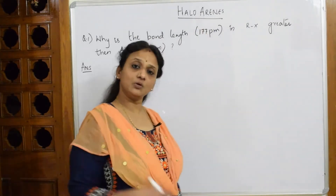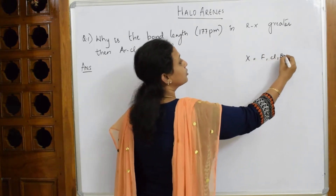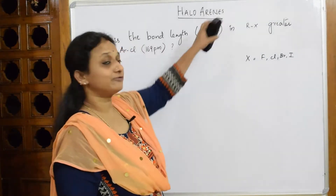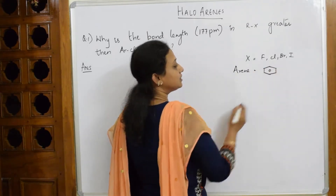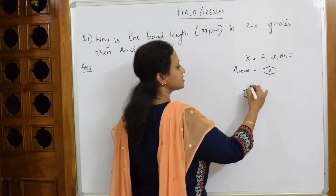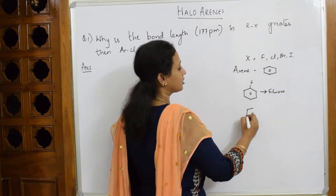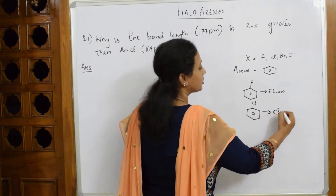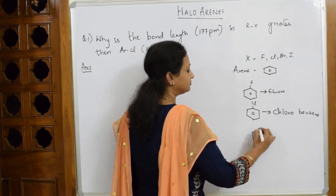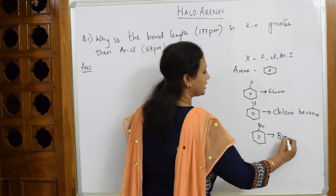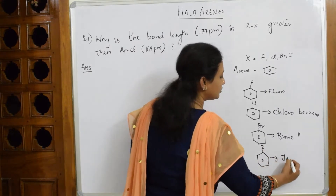As the name suggests, Haloarenes: Halo stands for X, where X can be fluorine, chlorine, bromine, or iodine. Arene stands for the aromatic or benzene ring. So if I take benzene and introduce fluorine, it becomes fluorobenzene. If I introduce chlorine, it becomes chlorobenzene. Next would be bromobenzene, and then iodobenzene. These are the different types of Haloarenes.